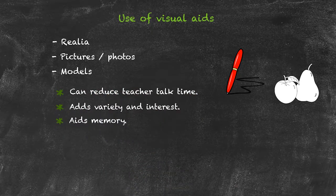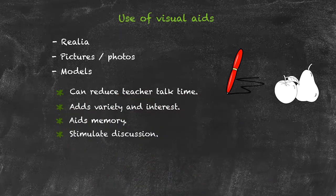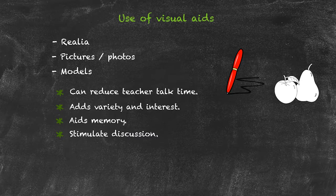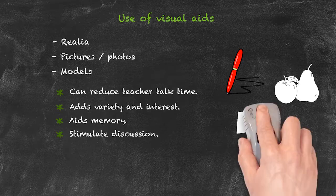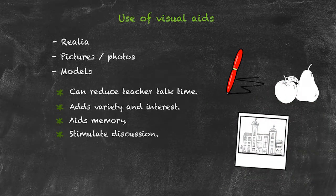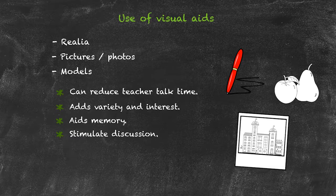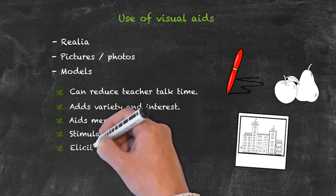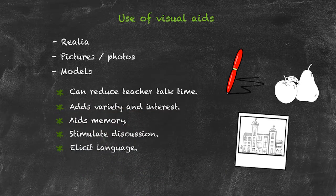Another thing visual aids can do is stimulate discussion. By having some form of real object or photo, we can actually stimulate a discussion and they can be used to elicit language. For example, I might show my students a photograph and elicit language surrounding possible scenarios from that photograph.